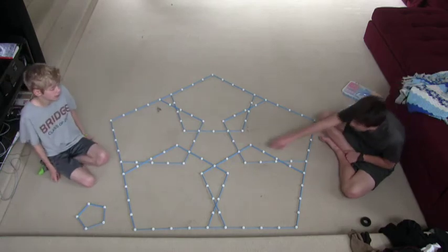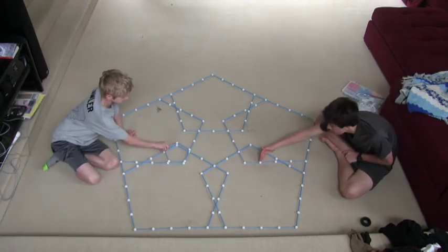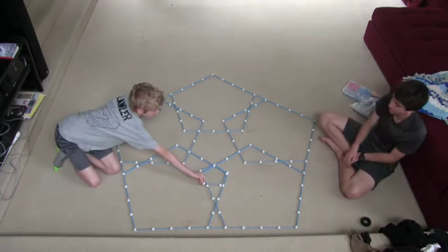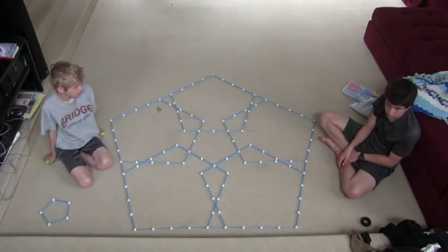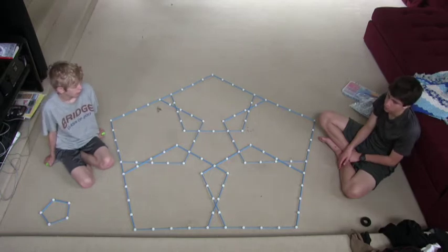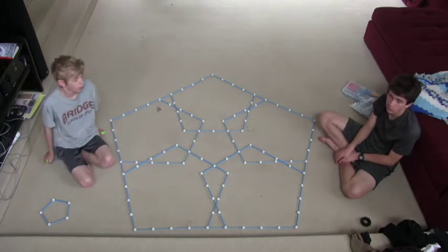And again, where are those? Here. If you connect up here, you've got a pentagon. Okay, and the side length 9 pentagon produced the side length 2 pentagon, so our 9, 4 pair produced a 2, 1 pair when we did it.